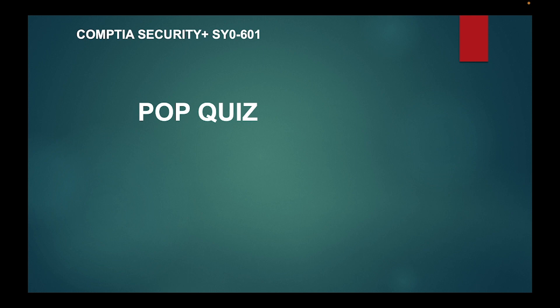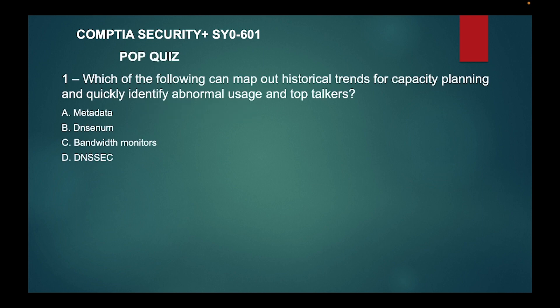All right, CompTIA Security+ SY0-601 pop quiz. We're on Part 61. Question one: which of the following can map out historical trends for capacity planning and quickly identify abnormal usage and top talkers? Is it a) metadata, b) DNS enum, c) bandwidth monitors, or d) DNS?